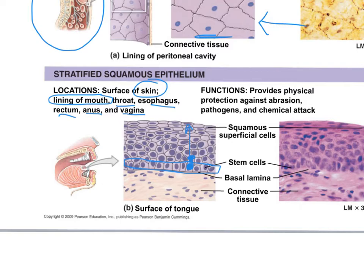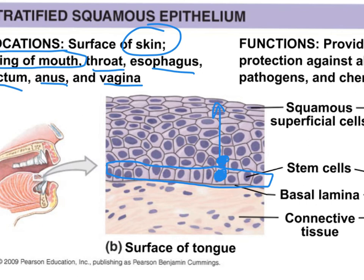When looking at stratified squamous near the basement membrane, cells can look cuboidal — but we determine cell shape at the apical surface. Looking at the surface exposed to the lumen of the passageway, you can see flatter, squamous-shaped cells. That's how we know it's a squamous epithelium.